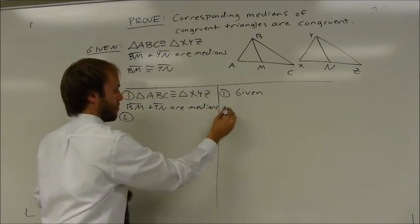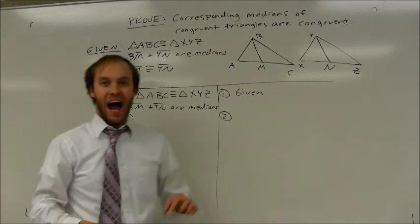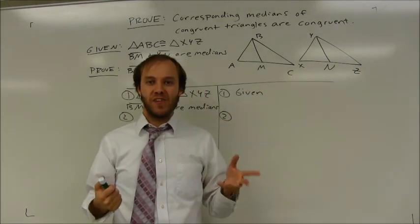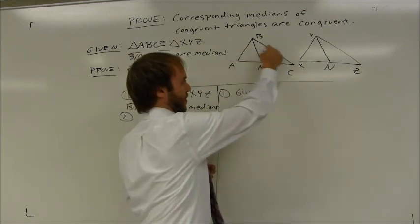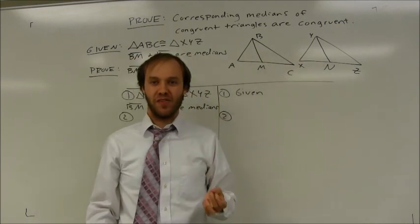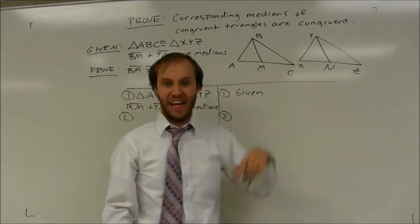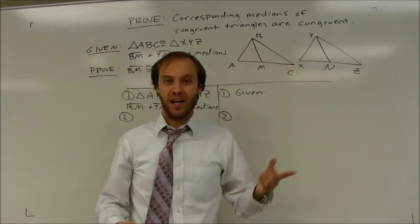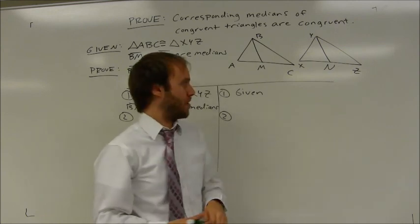Now I'll set up my two-column proof with those givens. My approach is going to be pretty straightforward — I need to prove that these medians are congruent to each other. Most of the time that I've proved segments congruent, I've done it with congruent triangles, and I'm going to do that here as well. I already know that the original triangles are congruent, but these medians aren't sides of those triangles, so I need to pick two triangles that include BM and YN as sides. I can pick the two left-side triangles or the two right-side triangles — in my case, I'm going to pick the two triangles on the right.